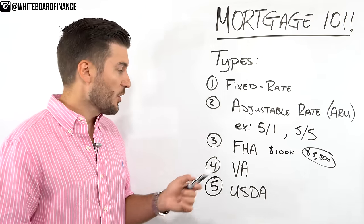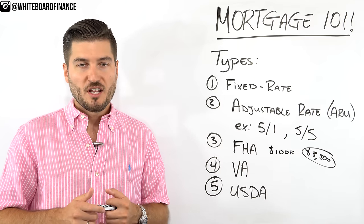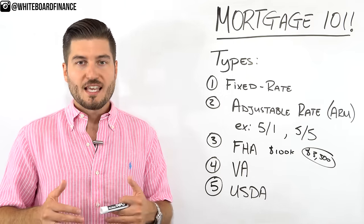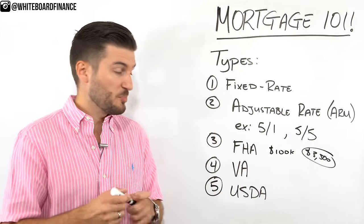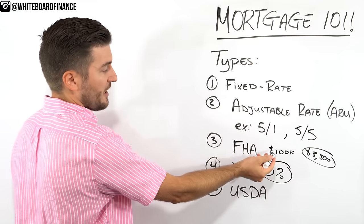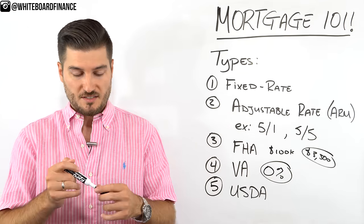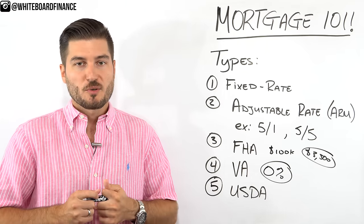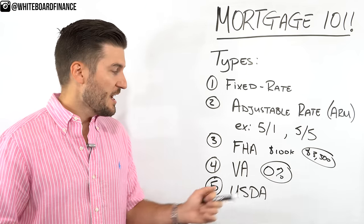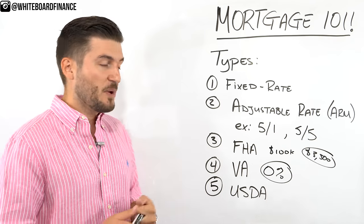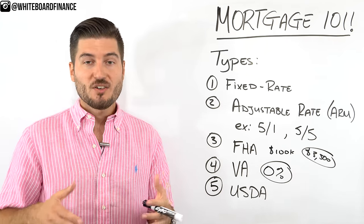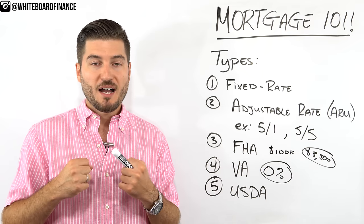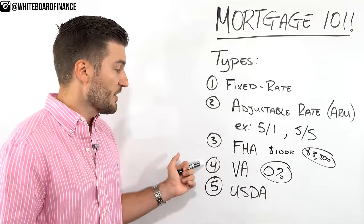Fourth is the VA Mortgage, insured by the Department of Veteran Affairs — for military service members and veterans. The great thing about a VA loan is that you don't need any down payment whatsoever — you can put down zero percent. You will have to pay a VA funding fee, which I'll link in the description, but there's also no PMI on this zero percent down payment. Your mortgage payment will be higher, but you have very little money out of pocket, which allows you to potentially invest that difference.